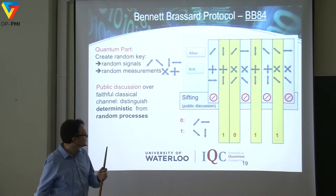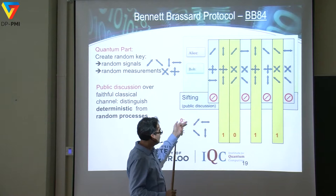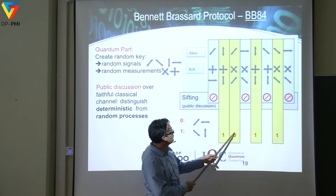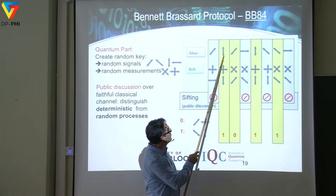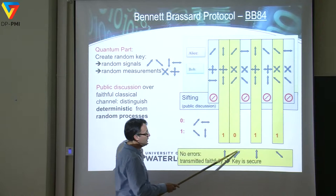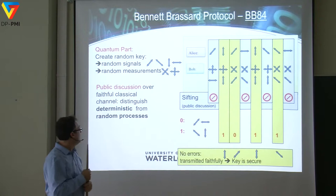They associate two of the polarization states with zero and the others with one. From the sifted events, they can determine which events correspond to ones and which to zeros. Alice knows which polarization she sent, Bob knows what he received, but they don't disclose that information — they only talk about the basis. In the end, they get the same string of ones and zeros, which forms the key.